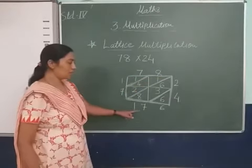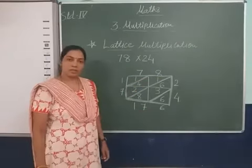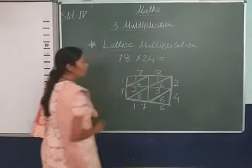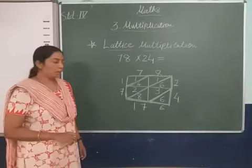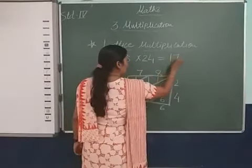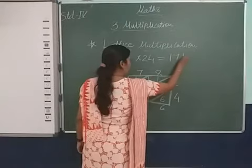So 1, 7, 7, 6 are the answer. The product is, while we are multiplying 78 multiply by 24, then we find the product 1776.